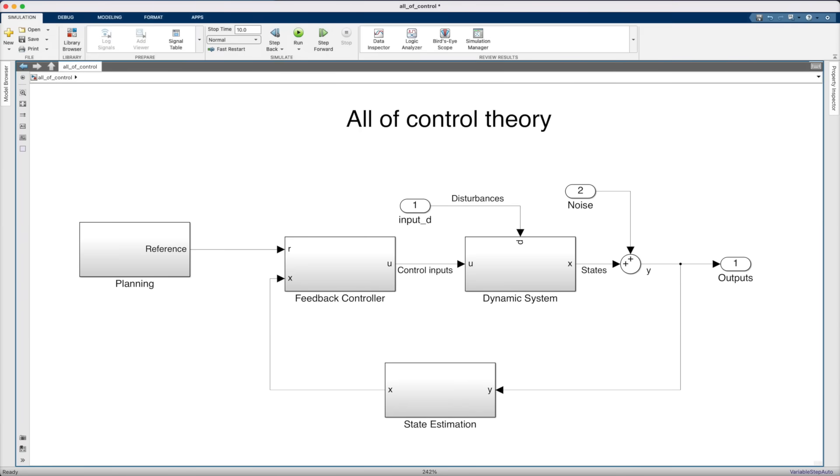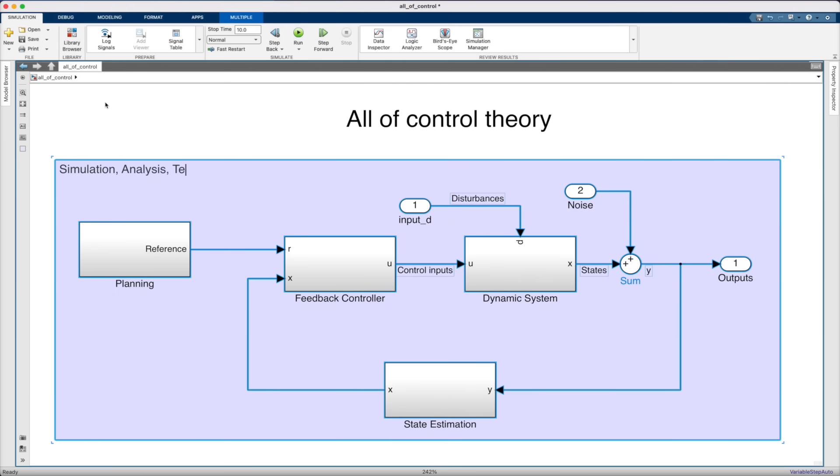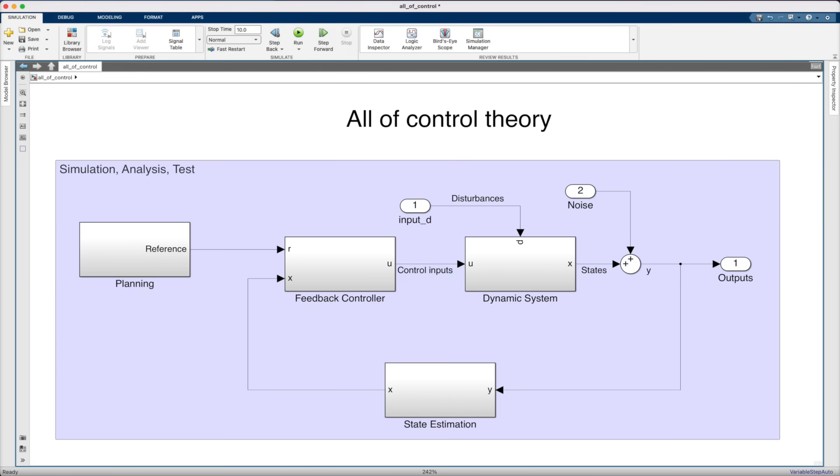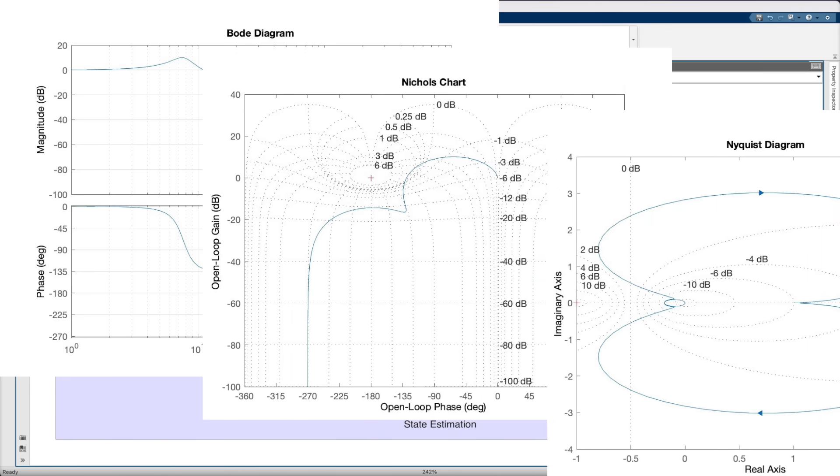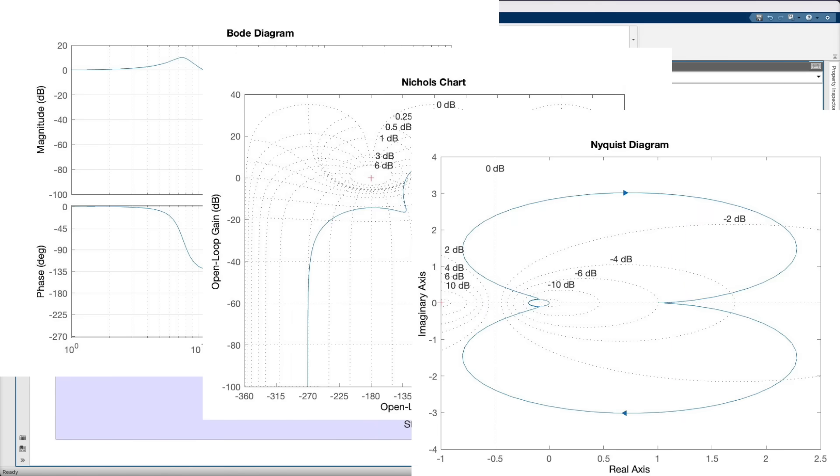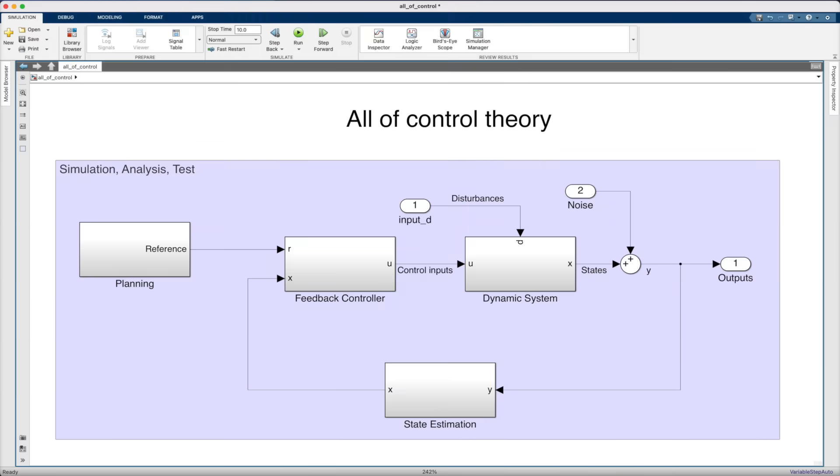Now, the last major part of control theory is responsible for ensuring the system that we just designed works, that it meets the requirements that we set for it. And this comes down to analysis, simulation, and test. For this, we can plot data in different formats, like with a Bode diagram, a Nichols chart, or a Nyquist diagram. We could check for stability and performance margins. We could simulate the system using MATLAB and Simulink. And all of these tools can be used to ensure that the system will function as intended.